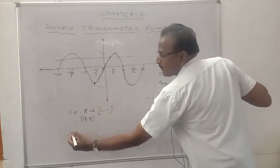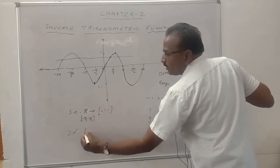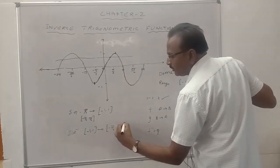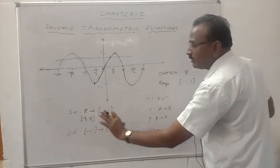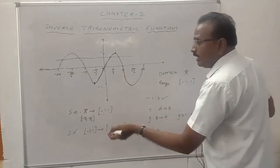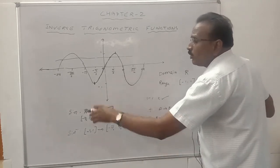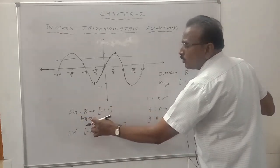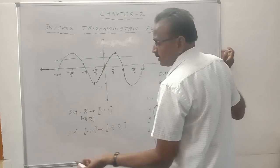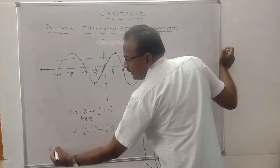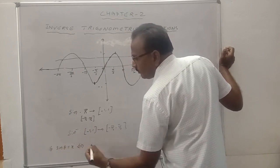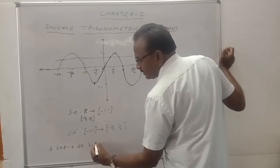Sine inverse is defined from the closed interval minus 1 to 1, to the closed interval minus pi by 2 to pi by 2. We define: sine theta equals x if and only if sine inverse of x equals theta, provided theta lies in the closed interval minus pi by 2 to pi by 2 and x lies in the closed interval minus 1 to 1.